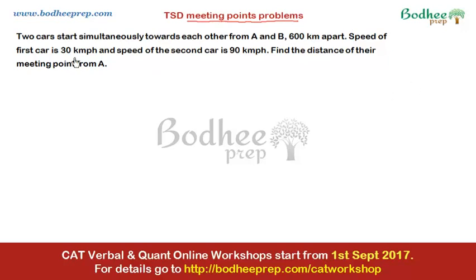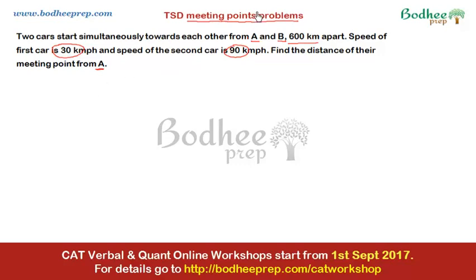In this question, there are two cars simultaneously moving from A to B, which are 600 kilometers apart. The speed of the first car is 30 and the speed of the second car is 90, and we need to find the distance of the meeting point from point A. The key thing to remember for meeting point questions is that speed equals distance divided by time.